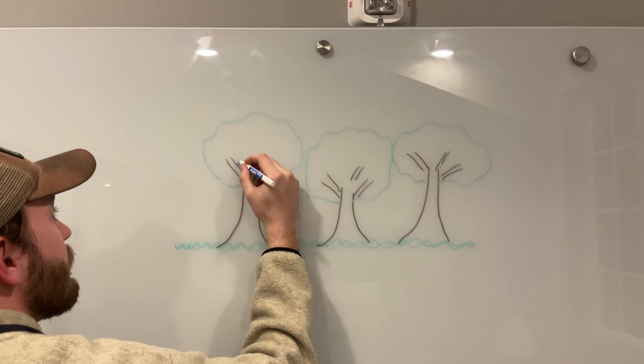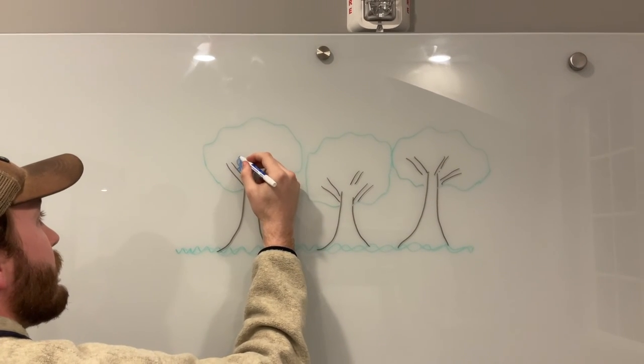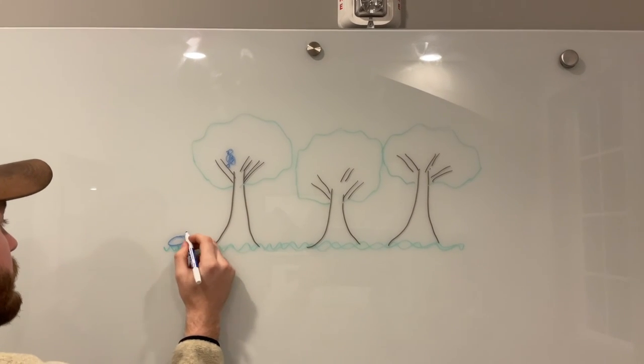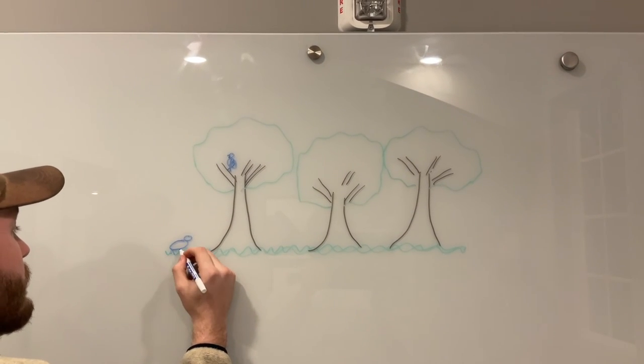For our last fun fact of the day, in the moist rainforest of South America, sloths move so slowly that algae are able to grow in their fur. Whoa!